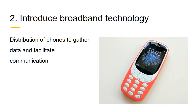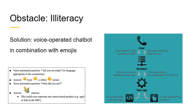Secondly, once electricity sources are established, one can introduce broadband technology. Through distribution of phones like the Nokia 3310, the World Food Programme can easily gather data and facilitate communication beneficial for both data collector and provider. Illiteracy remains a significant obstacle, and we recommend the World Food Programme use and build a voice-operated chatbot such as Fur Voice in combination with a standardized emoji language.